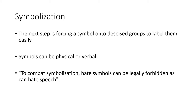The next stage is symbolization, when a symbol is forced onto despised groups so they are easily labeled. Symbols can be both physical or verbal. To combat symbolization, hate symbols can be forbidden — similar to hate speech laws. In the United States we have laws against hate speech. In Germany they have laws against both hate speech and hate symbols, so displaying the Nazi flag is illegal. The Germans are much more rigorous at punishing and stopping those kinds of things.